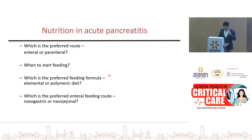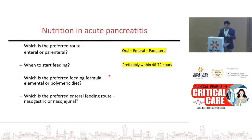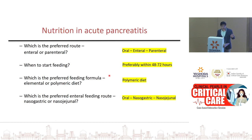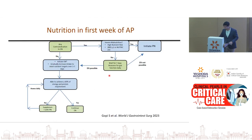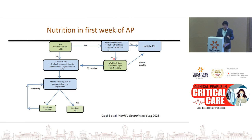The preferred route is always oral or enteral over parenteral. Start feeding as soon as possible, preferably within 48 to 72 hours — early enteral nutrition has a mortality benefit in acute pancreatitis. Never keep the patient nil per oral for days. Use polymeric diet — no need for elemental formula. If the patient tolerates oral feeding give it orally; if there is pain or vomiting, try a nasogastric tube. If there is a contraindication to enteral nutrition — raised intra-abdominal pressure or severe vomiting — check for underlying malnutrition. If malnourished, initiate parenteral nutrition; if not, you can wait a maximum of 7 days before starting parenteral nutrition.